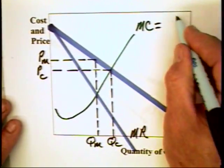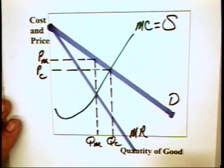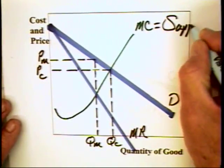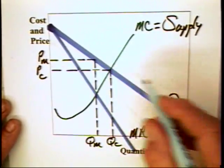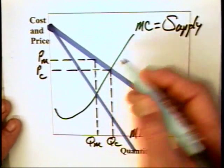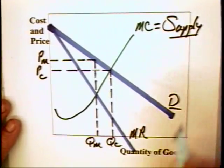Now, in a perfectly competitive market, the price will be PC with a quantity of QC. The reason is that in a perfectly competitive market, this is going to be equal to the supply curve.